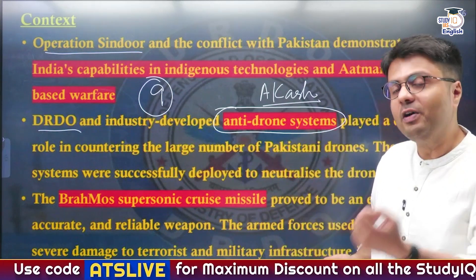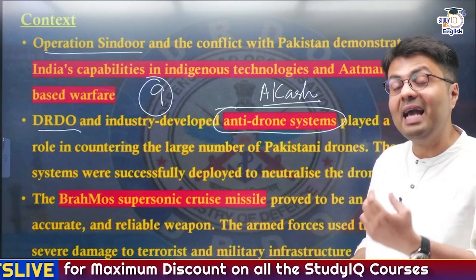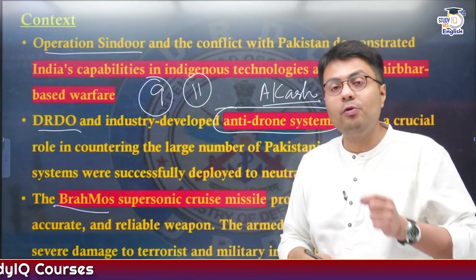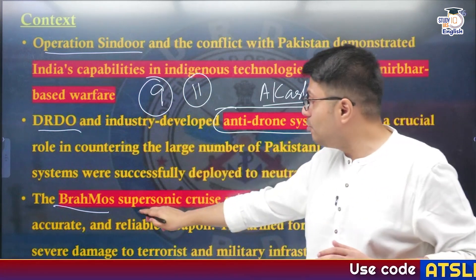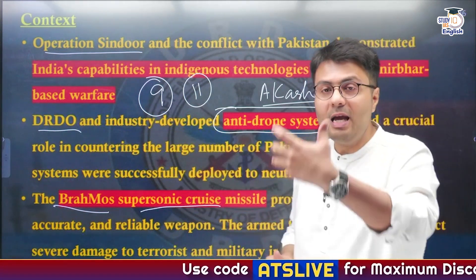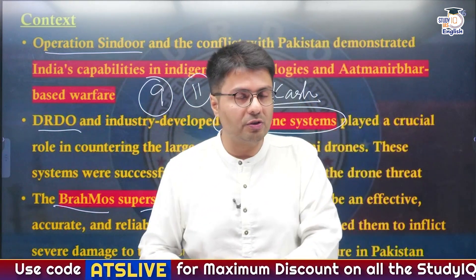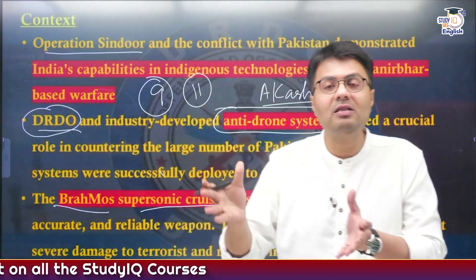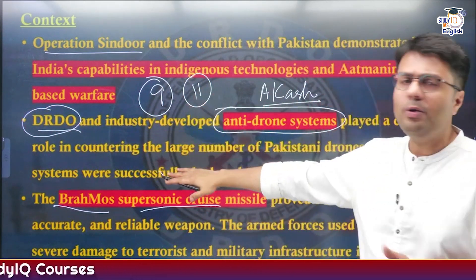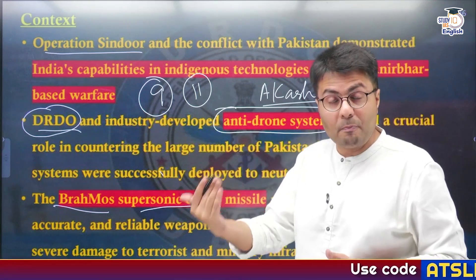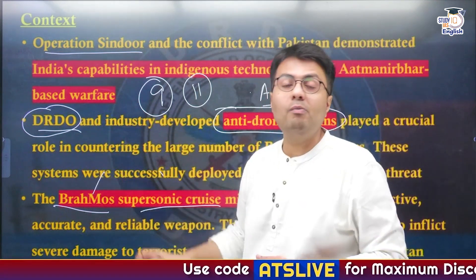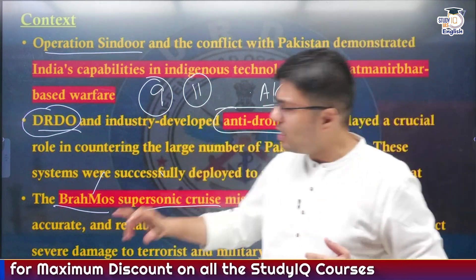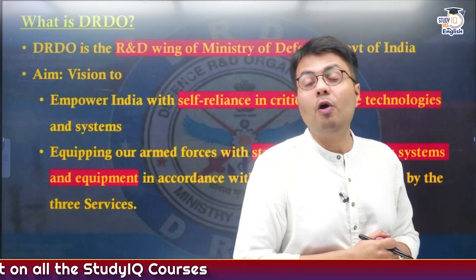Similarly, to respond to these attacks, Indian armed forces extensively used BrahMos missiles to target as many as 11 different Pakistani Air Force air bases. These supersonic cruise missiles enabled India to destroy important runways and hangars. In this video, we are going to discuss the role of DRDO in strengthening India's indigenous capabilities, and we'll cover important platforms and weapon systems developed by DRDO, like the Akash Missile System, BrahMos, Tejas, and the Astra Mark III or Gandiv missile.